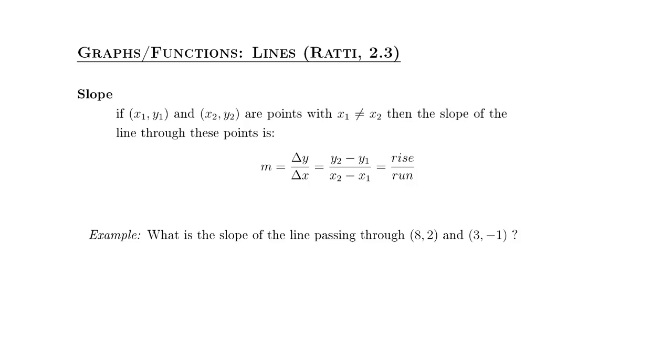The first thing to deal with is slope. If you have two points which we're going to represent as (x₁, y₁) and (x₂, y₂), and we don't want the x values to be the same, then the slope of the line through these points is denoted by the common single letter m for slope.